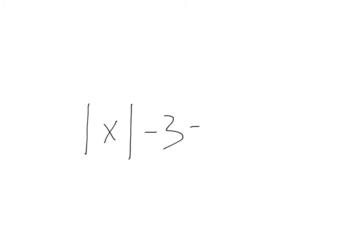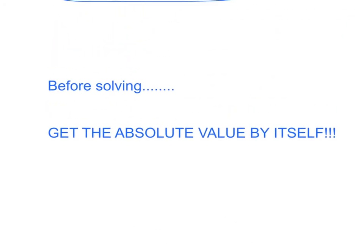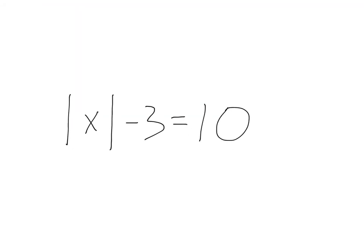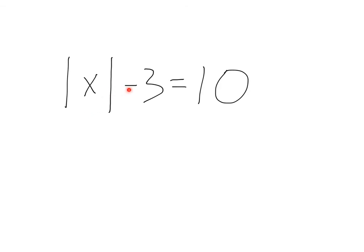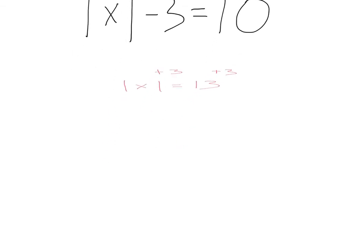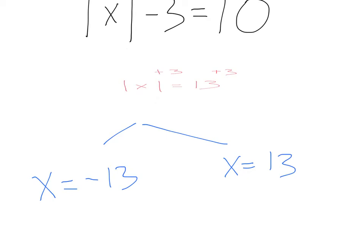If our absolute values get a little more complex, let's say we had absolute value of x minus three equals ten. In this case, not everything is inside the absolute value. Really important note: before solving for any absolute values, always get the absolute value by itself. In this problem, outside the absolute value we have a minus three. So before we split to positive and negative, let's add three to both sides. This leaves us with absolute value of x equals 13. From here, x equals negative 13 and x equals positive 13, because both are 13 spaces from zero.